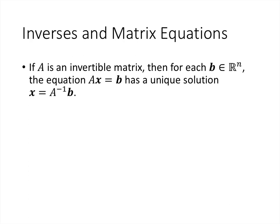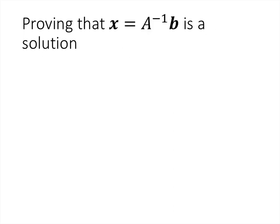One useful property of inverses is that when we have an invertible matrix, the equation Ax = B always has a solution, and in fact has a unique solution: x = A inverse B. To prove this, we need to show that A inverse B really is a solution, and then that it is a unique solution. First, we plug x = A inverse B into the equation Ax = B, giving A times A inverse times B.